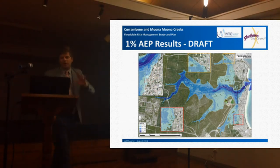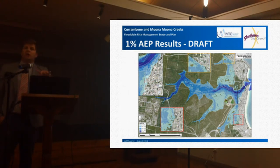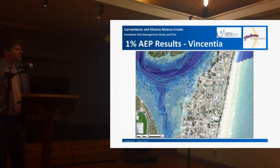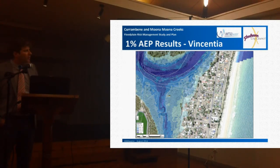You can see we've got inundation fringing on the development areas — shallow water, not necessarily overflow. This is one of the things that will happen when we finalise the design work: we will compare this to surveyed floor levels and actually look at the overflow flood liability and the damages from that. This is a zoom in on the southern end, Vincenia — some shallow water on those properties, probably depths up to about 0.5 of a metre in some of them.